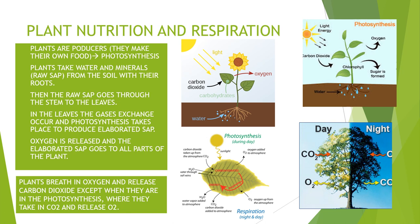Plant nutrition and respiration: remember that plants are producers, which means that they make their own food through photosynthesis. This process occurs because the plants take the water and minerals, which is the raw sap from the soil, and they take it through the stem to the leaves. This raw sap is converted in the leaves, taking into account the chlorophyll that the leaves have, which attracts the light energy, and then photosynthesis occurs there.